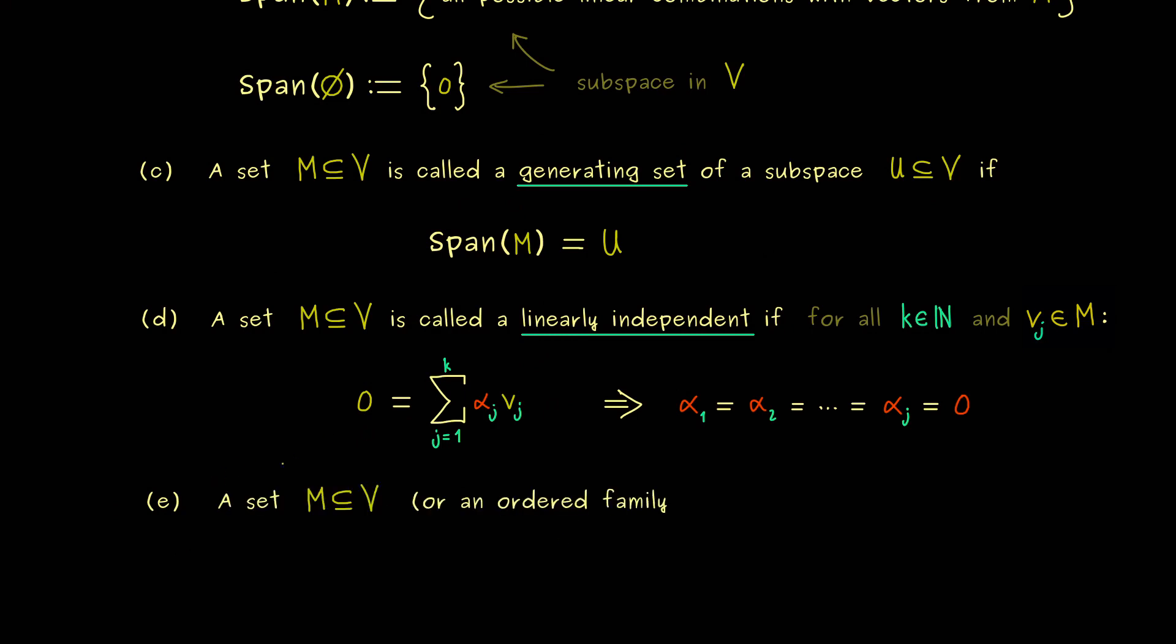And this thing we now can define for general sets M or for ordered families. And here ordered family just means that we have a set of vectors with an order. So usually if we have a set with finitely many vectors we always would order them. In fact this is what we have done before, simply because it helps later on. But even if we don't have an order, we can still define the notion basis.